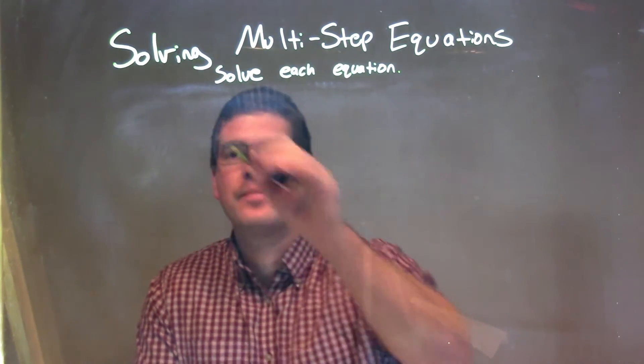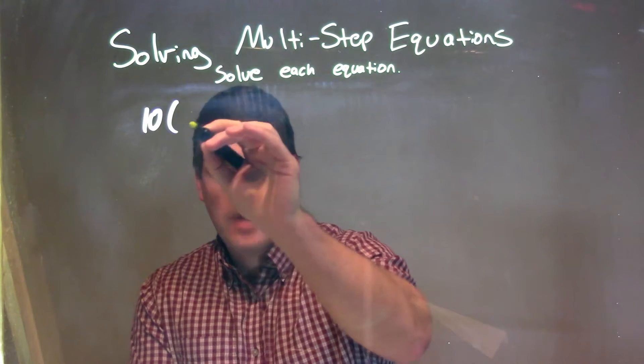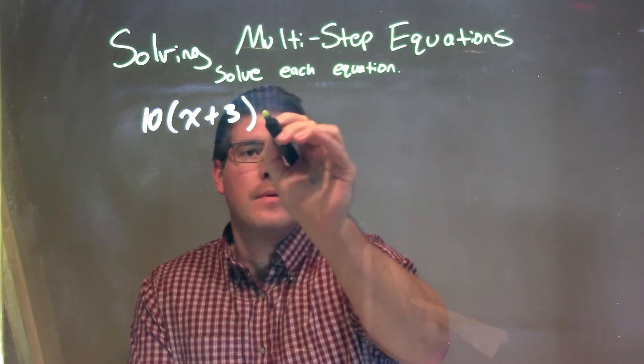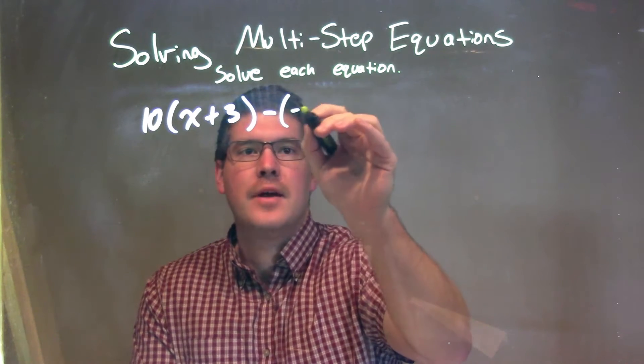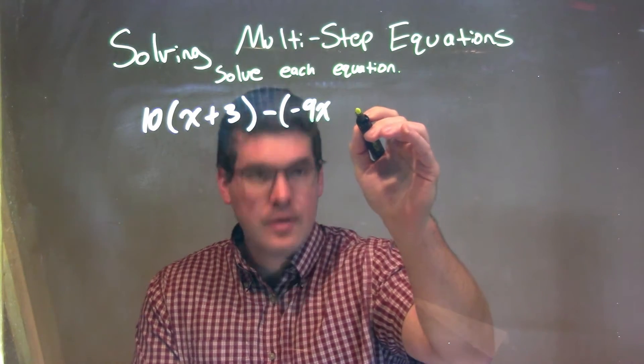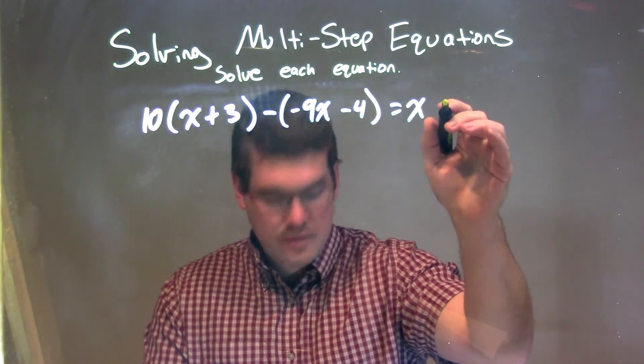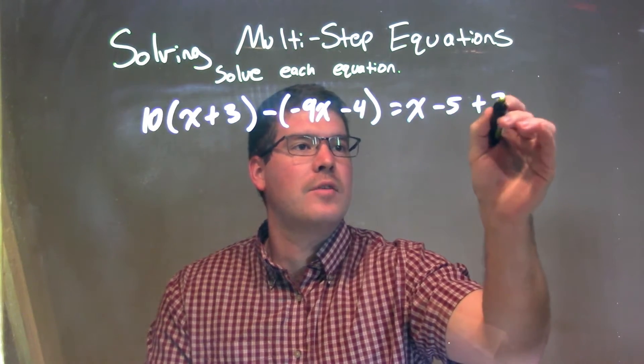So if I was given this equation: 10 times (x + 3) minus (-9x - 4) equals x - 5 + 3.